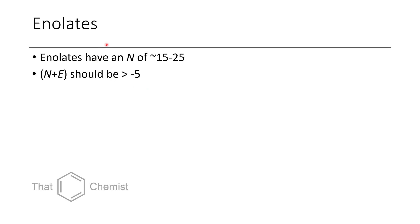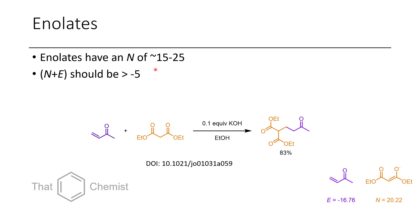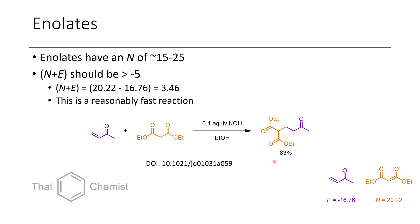Enolates are deprotonated ketones, as we were talking about earlier. TMS enol ethers tend to only have an N of around 7 or so. Once we've deprotected them and reopened them as an anionic enolate, we have a much higher nucleophilicity value — a million times or much greater increase in reactivity. In this case, we have the addition of diethyl malonate to methyl vinyl ketone in the presence of potassium hydroxide, generating the enolate in situ. This was obtained in 83% yield. Putting in the N and E values, we can see this is a reasonably fast reaction with a positive value — this is going to work fairly well.